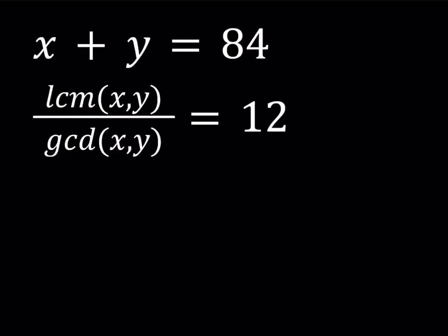Let's review what these mean. LCM stands for the least common multiple of x and y, and GCD stands for the greatest common divisor of x and y. So we're given the ratio of the LCM and the GCD, we're given the sum of the two numbers, and we're supposed to solve for x and y which are positive integers.